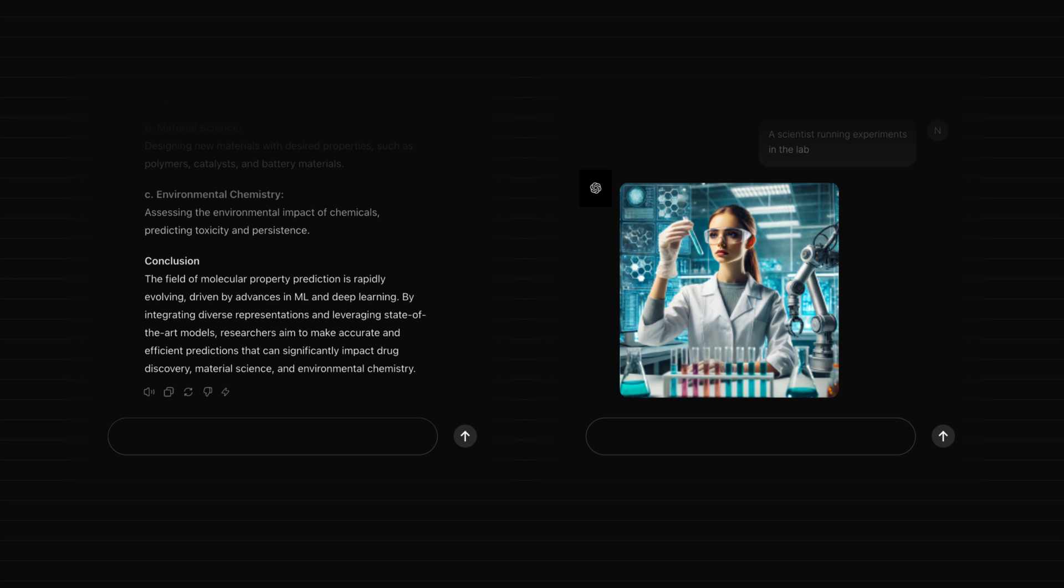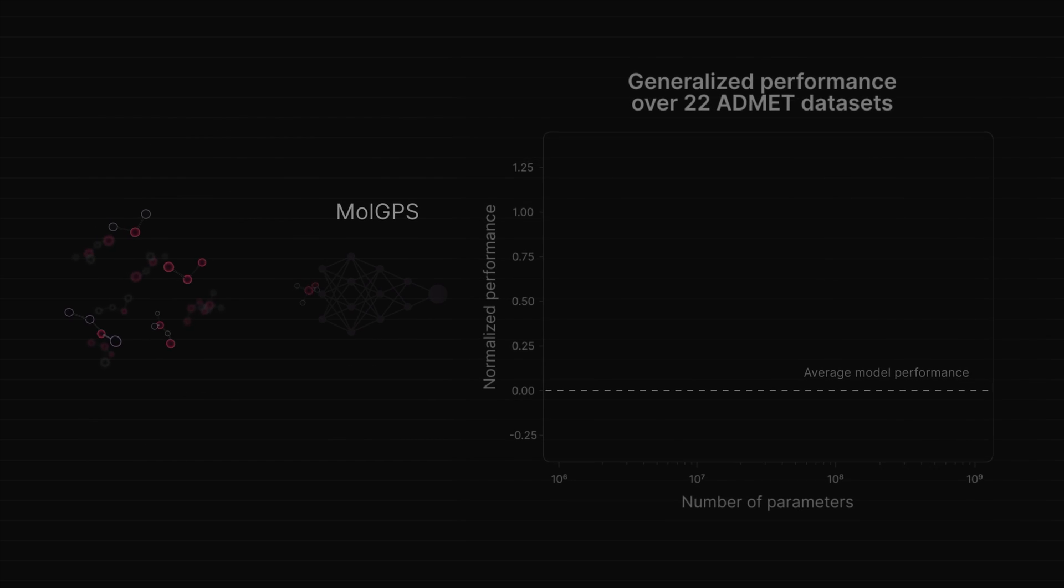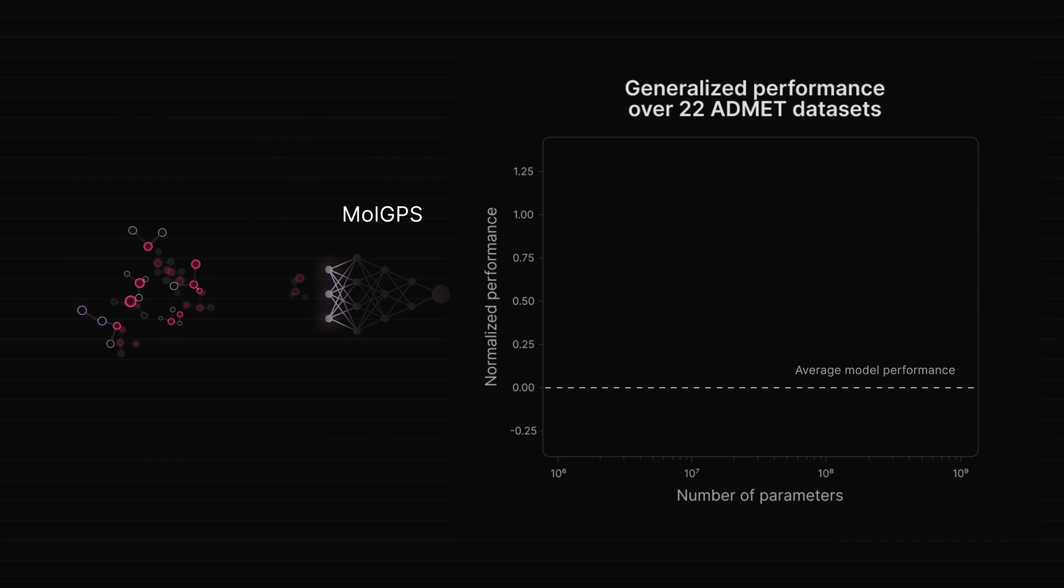However, the benefits of scale for graph-based models have not been explored until now. With MolGPS, we showed for the first time that graph-based models benefit tremendously from scale.